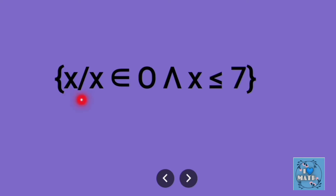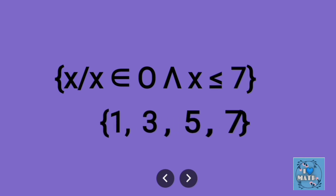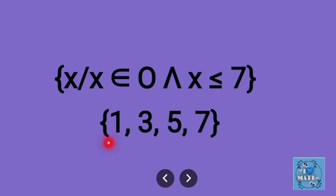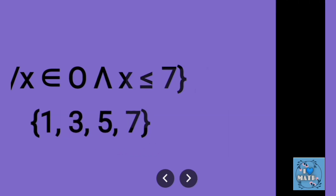Example: { x | x ∈ O, x ≤ 7 }. Here O means odd numbers, and x ≤ 7 means we take odd numbers from 1 to 7. These are 1, 3, 5, 7.